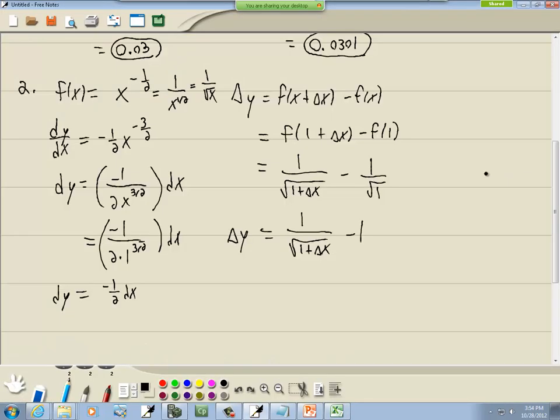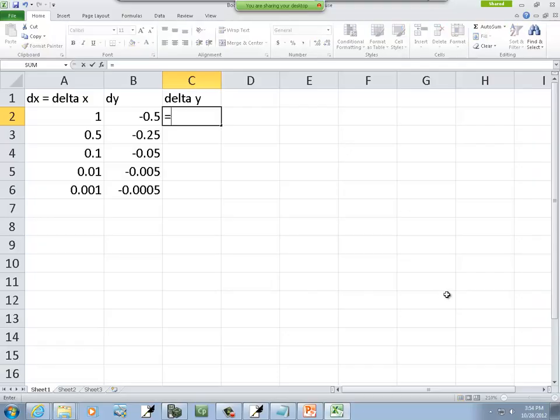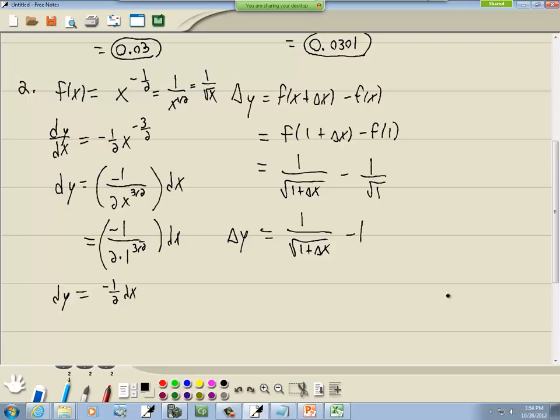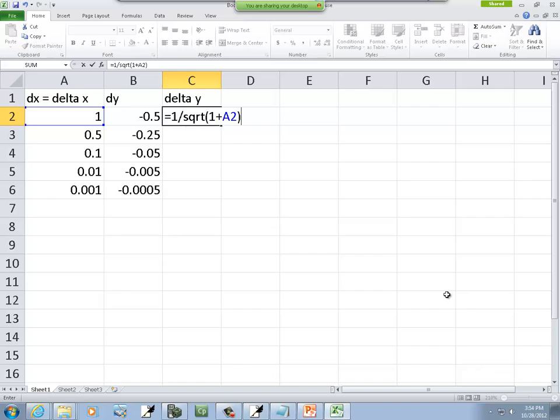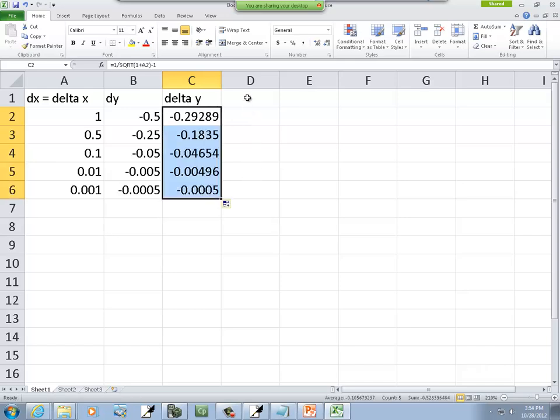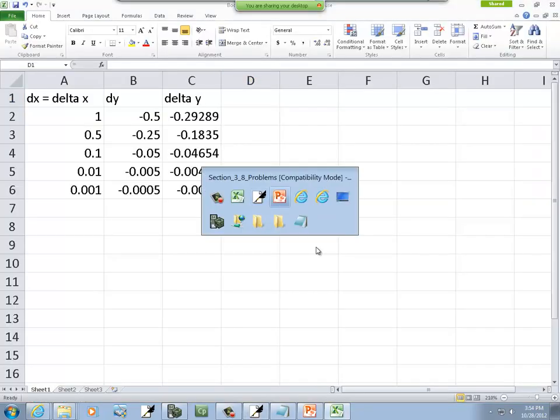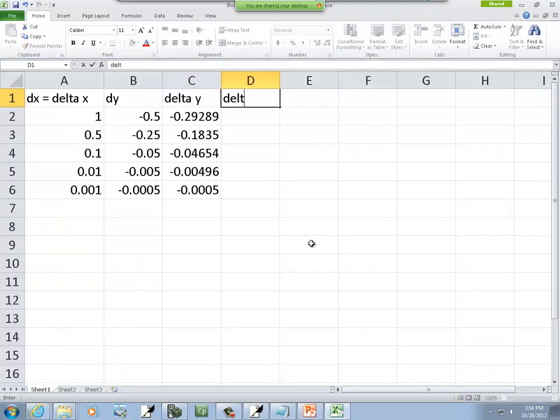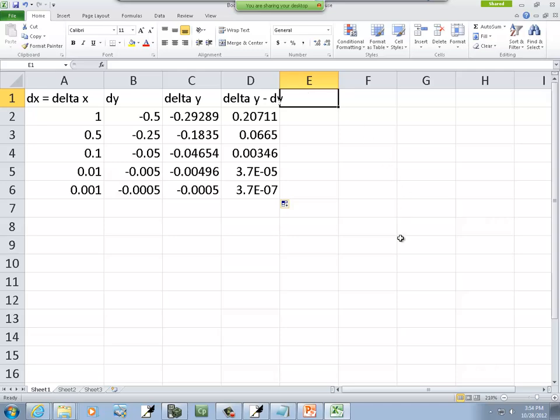And then we've got delta y. Delta y from our formula was this right here, 1 over square root of that. So, equals 1 divided by, and then square root of 1 plus delta x, which is a2, close parentheses on the square root, then minus 1. And then I've got delta y minus dy. So, we've got equals c2 minus b2. And then I've got dy divided by delta y, which is c2. And then I'll fill that down.